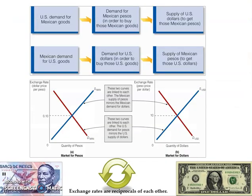When we enter the foreign exchange markets, what we're really doing is participating in two separate markets. For example, if I'm going to travel to Mexico, I need to first enter the market for U.S. dollars in order to supply them, and then enter the market for pesos in order to demand pesos.